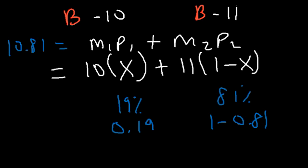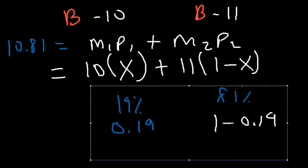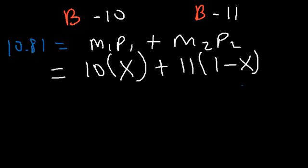So 0.19 is 1 minus 0.81. So the way you want to solve it is, if P1 is X, then P2 has to be 1 minus X. Because if X is 0.19, then 1 minus 0.19 is 0.81. So X plus 1 minus X is 1, which represents 100%. So if you write the equation this way, you should get the answer.